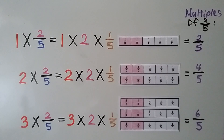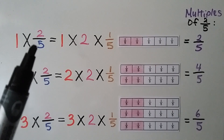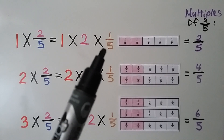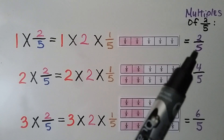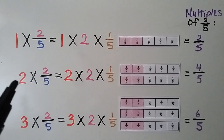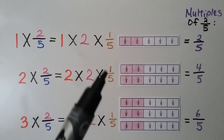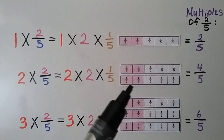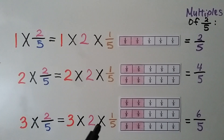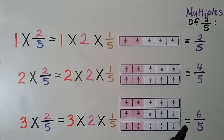Using models we can see what's happening. For 1 times 2/5, we have 2/5 one time, equal to 2/5. For 2 times 2/5, we have 2 times 2 which is 4 times the unit fraction 1/5, giving us 4/5 — that's 2/5 two times. For 3 times 2/5, we do 3 times 2 which is 6 times 1/5, so 2/5 three times gives us 6/5.